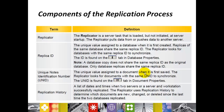The Unique Node Identification Number (UNID) is a unique value assigned to a document when it is first saved. The replicator looks for documents with the same unique ID to synchronize. The UNID can be found in your document properties. Replication History is a list of dates and times when two servers, or a server and workstation, successfully replicated. The replicator uses replication history to determine which documents are new, changed, or deleted since the last replication.